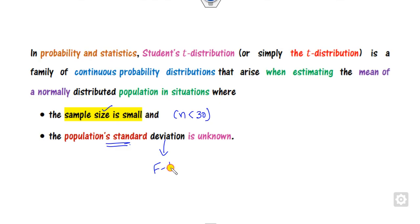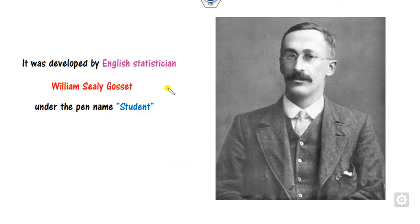The T-distribution applies when the population standard deviation is unknown to you. To check about the standard deviation, you have to use the F-distribution, which we have already discussed in our last class. This T-distribution was defined by William Sealy Gosset, who published it under the pen name 'Student'.